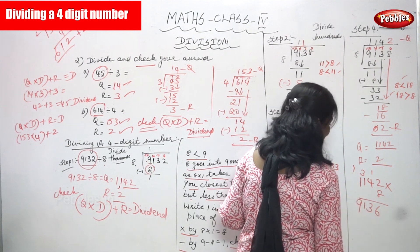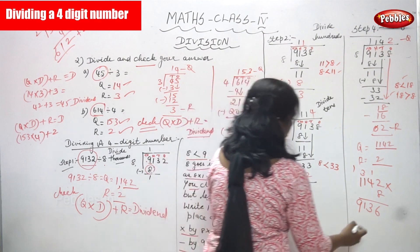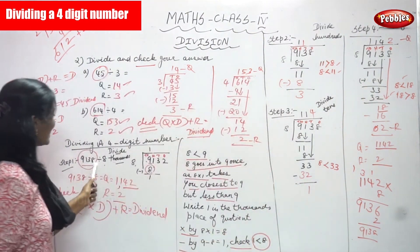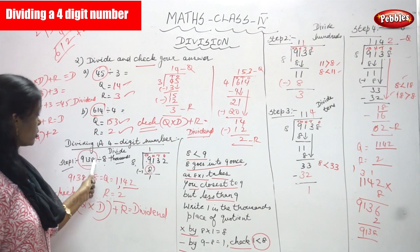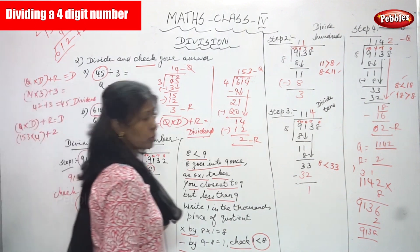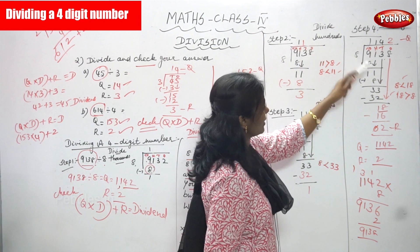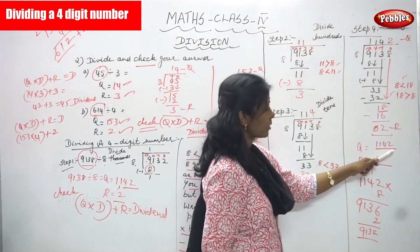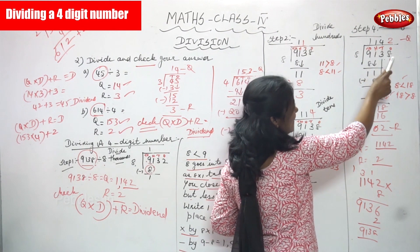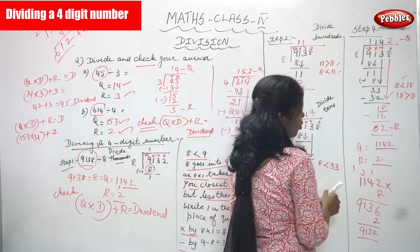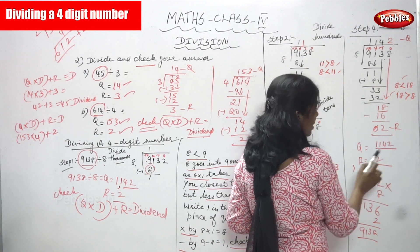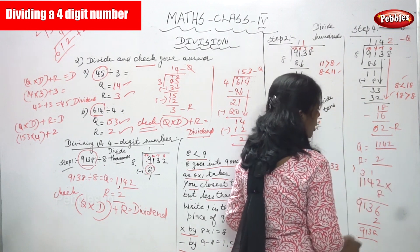Wait — the question is 9138 divided by 8, but I had written 9132. I need to correct that. So the dividend is 9138, not 9132. The quotient is 1142 and the remainder is 2. The actual dividend is 9138 and divisor is 8.